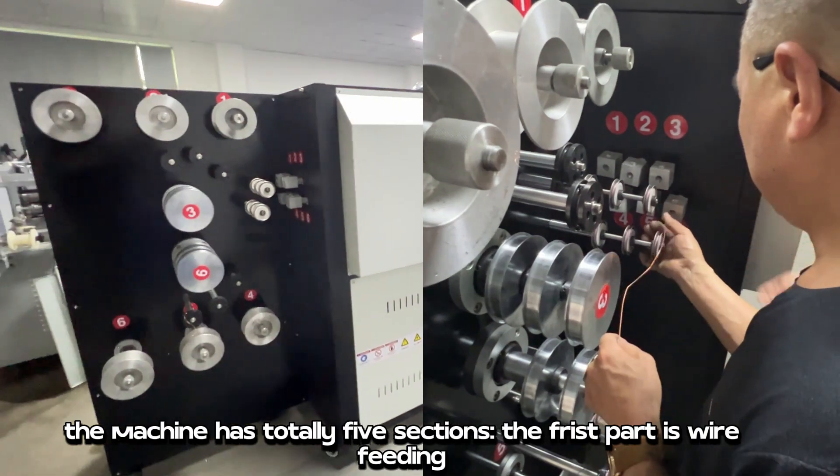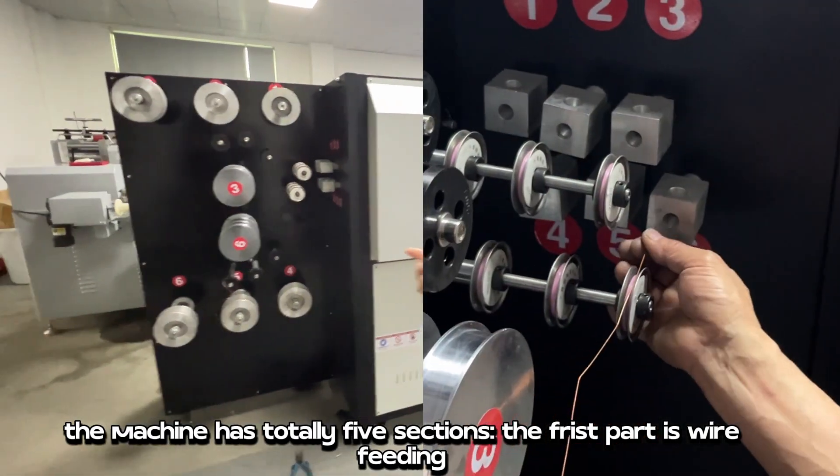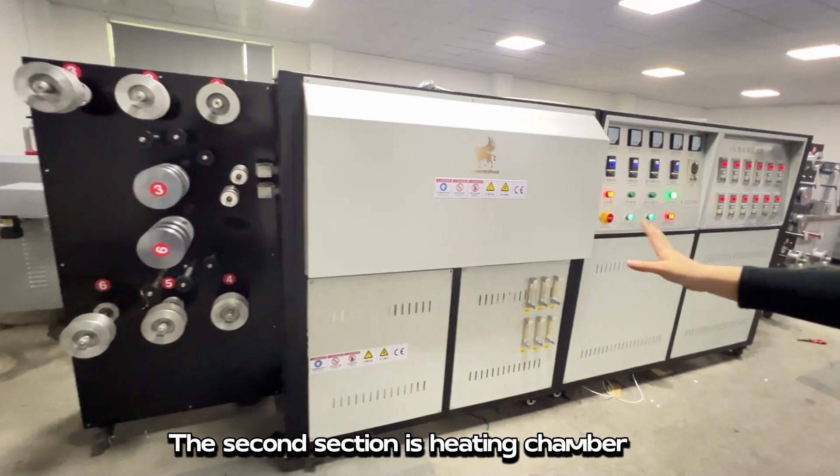The machine has totally 5 sections. The first part is wire feeding. The second section is heating chamber.